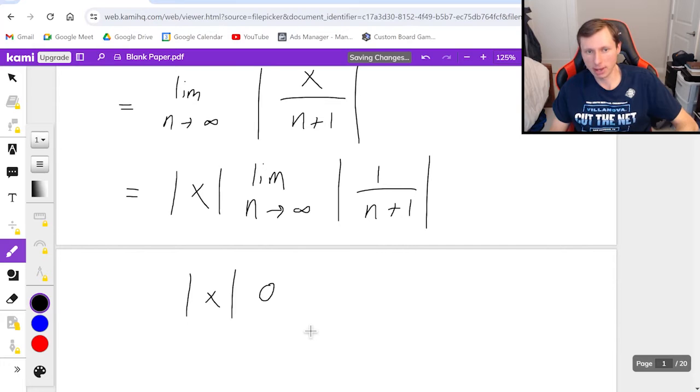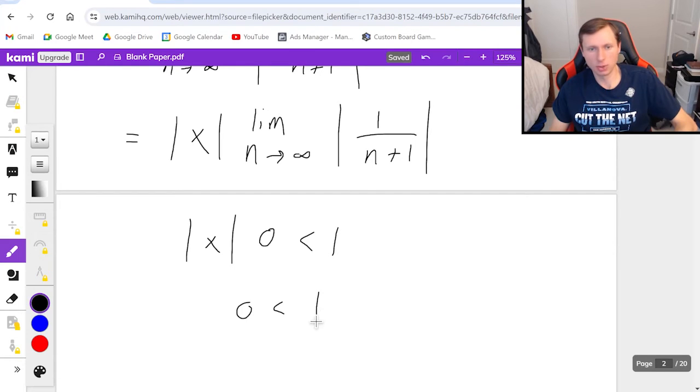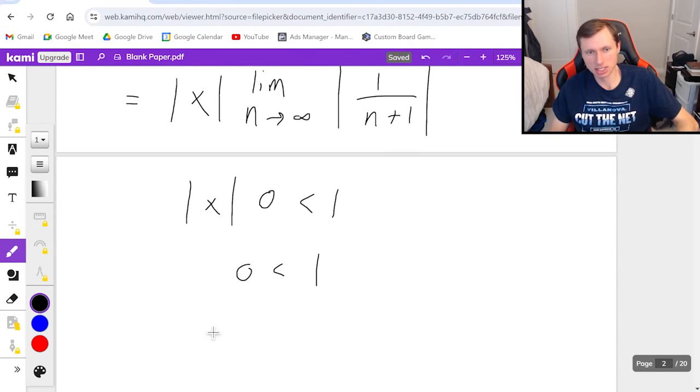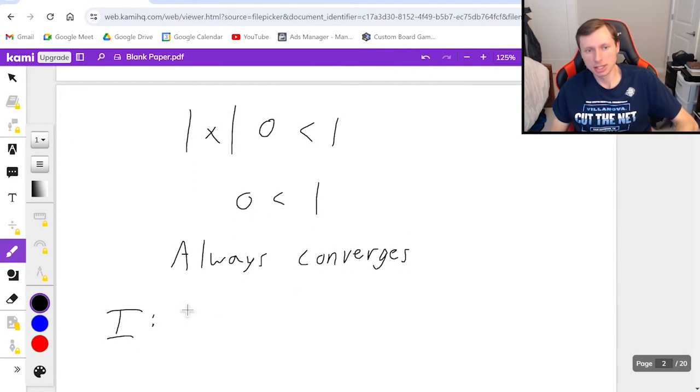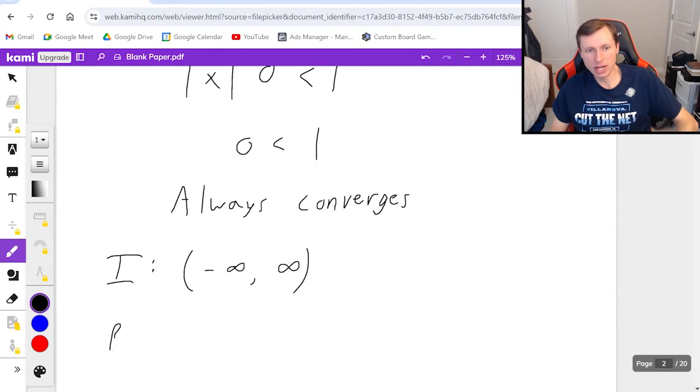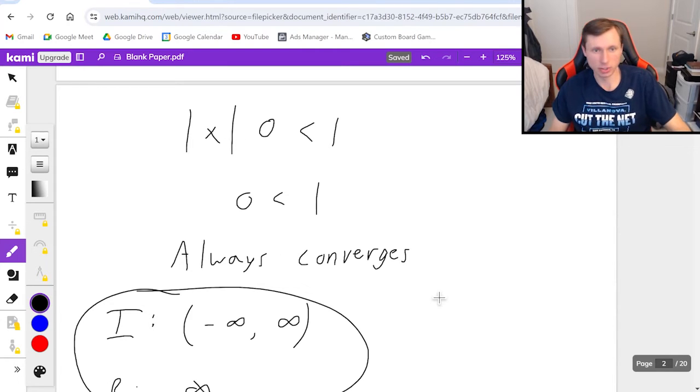This is that special case I was talking about. And the reason why it's so special is because remember that this just needs to be less than one in order to converge because anything times zero is just zero. You get zero less than one. And so the answer is it always converges for any value of x. So for the interval of convergence you write negative infinity to positive infinity. And for the radius of convergence you're just going to write infinity for that as well. That's what happens whenever you have a zero at the end of your ratio test.